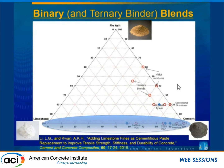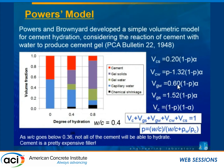Looking at our ternary diagram, we start at the bottom looking at just cement replacement with limestone. The Powers model tells us that at about a water-to-cement ratio of 0.36, we start to see unhydrated cement left over in the microstructure. So if we can replace some of that unhydrated cement with limestone, that would be beneficial.